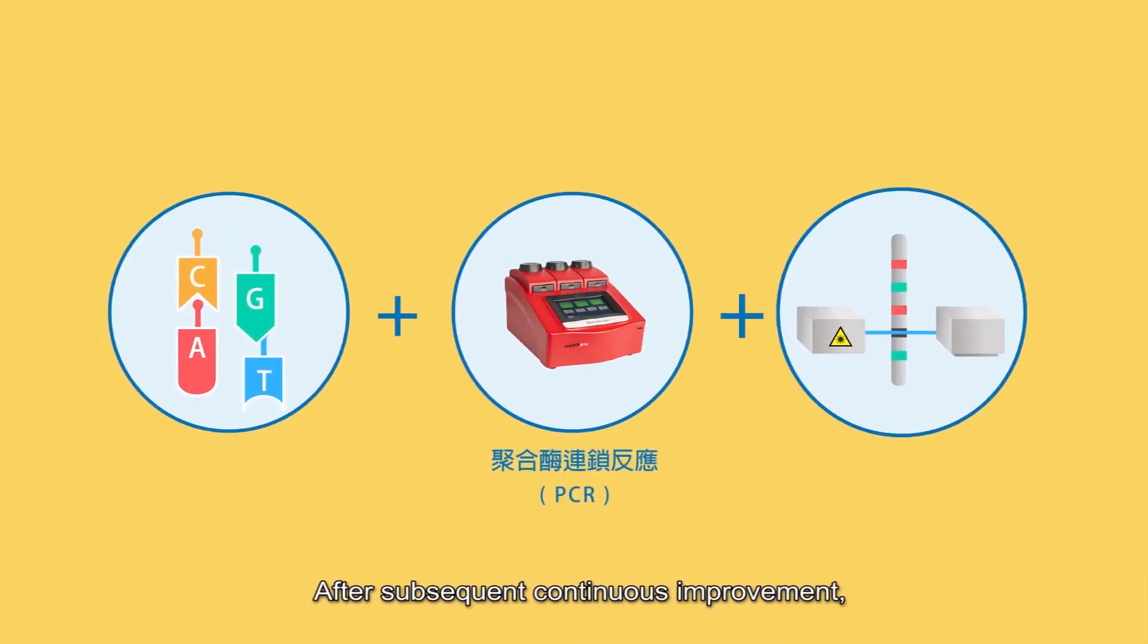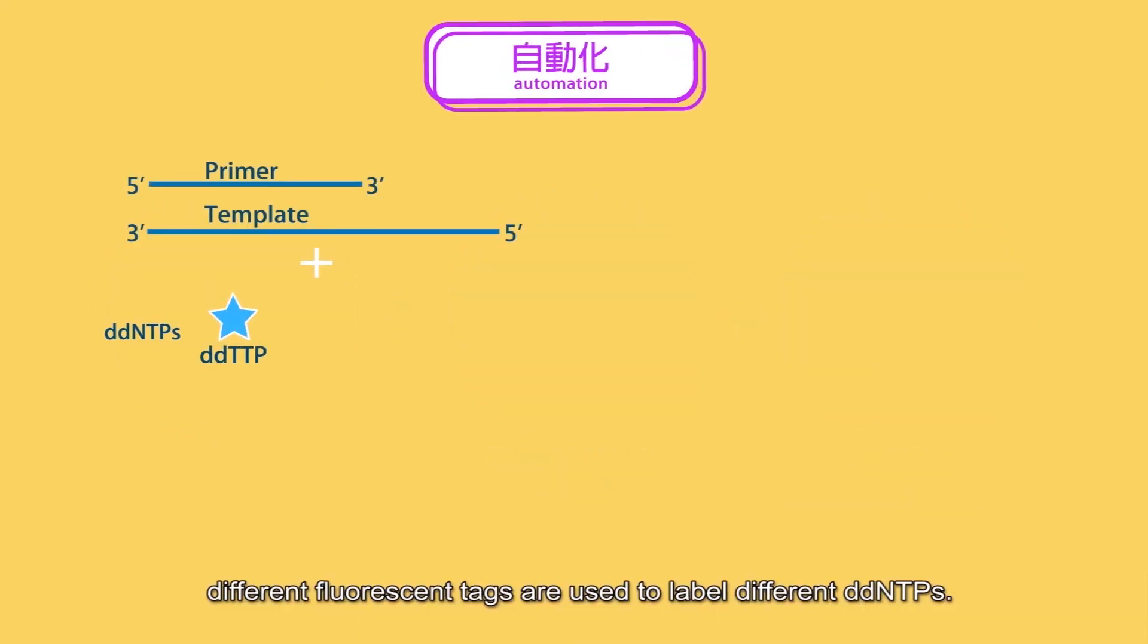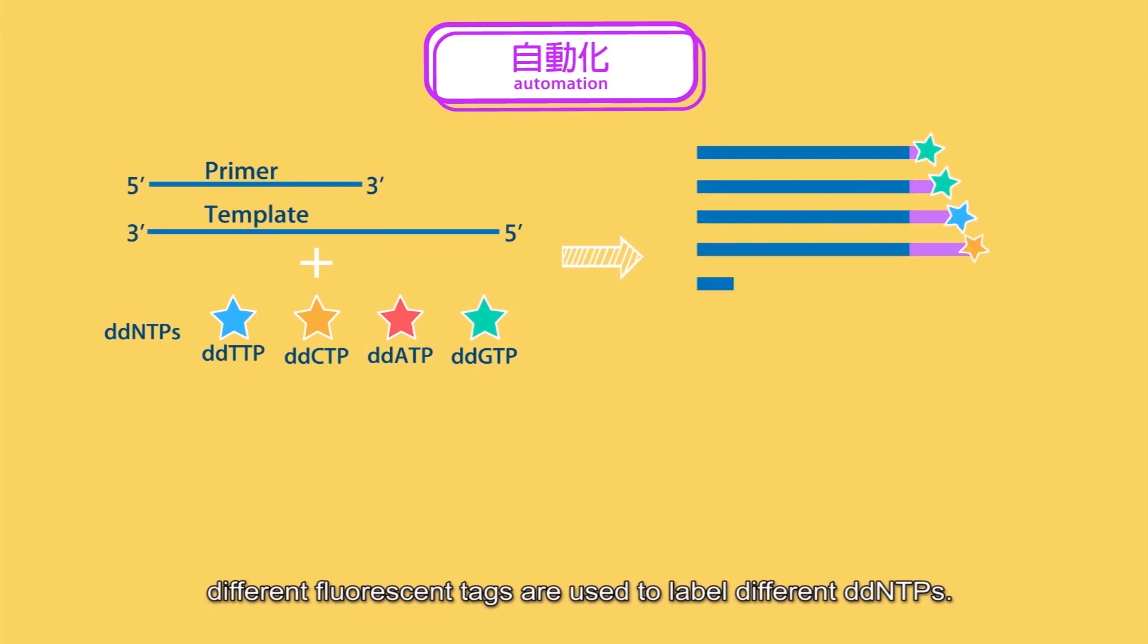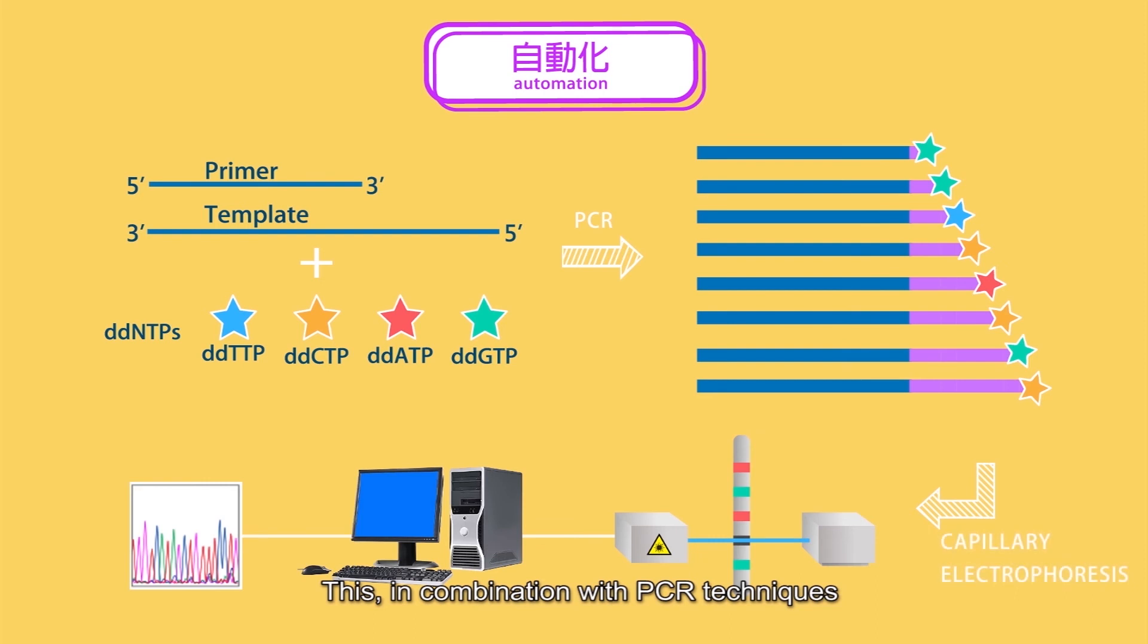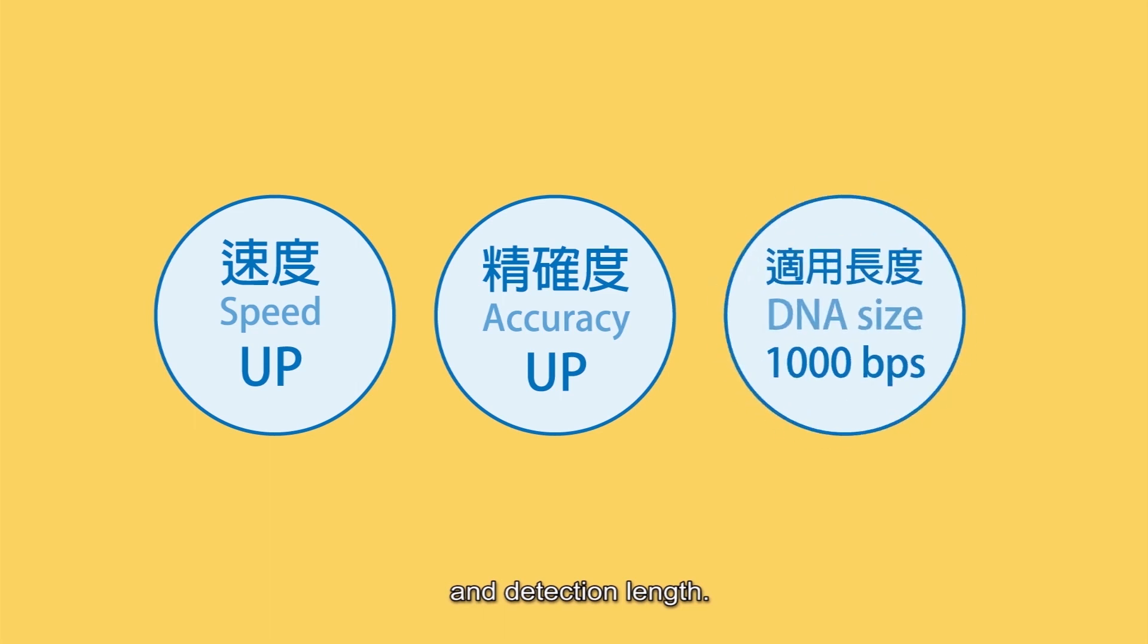After subsequent continuous improvement, different fluorescent tags are used to label different ddNTPs. This, in combination with PCR techniques and capillary electrophoresis, enabled the automation of the reaction and interpretation, which greatly increases the speed, accuracy, and detection length.